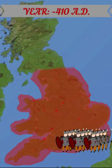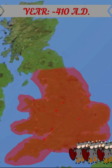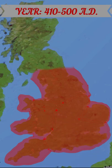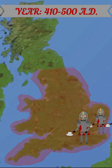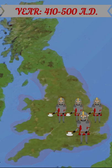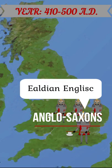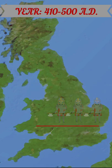In the year 410, the Roman army abandoned Britannia. The next century saw the collapse of the old Roman way of life, as well as the arrival of Saxon and Anglian settlers from Germany. They introduced the Old English language, eventually forming the Anglo-Saxon culture.